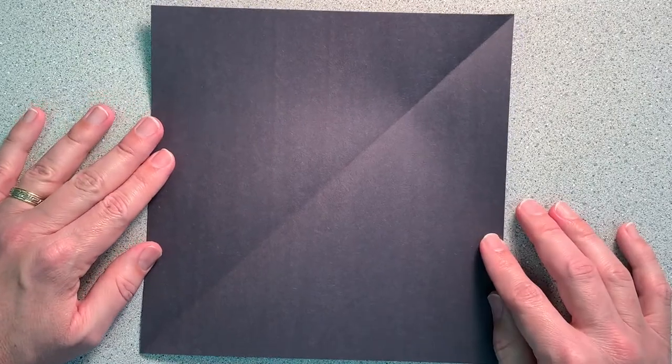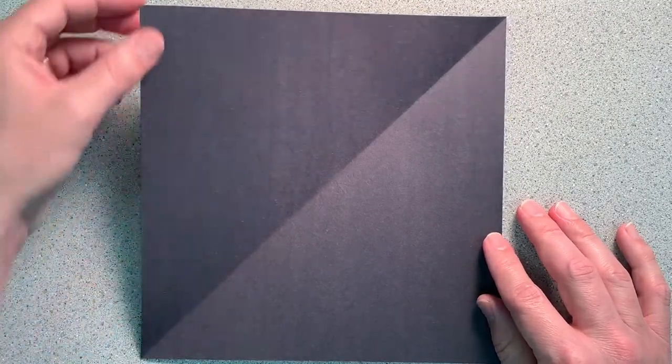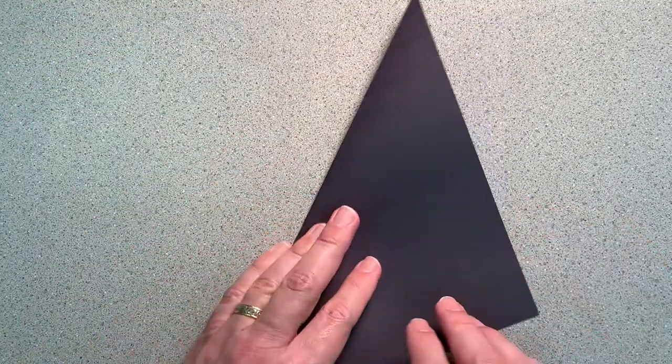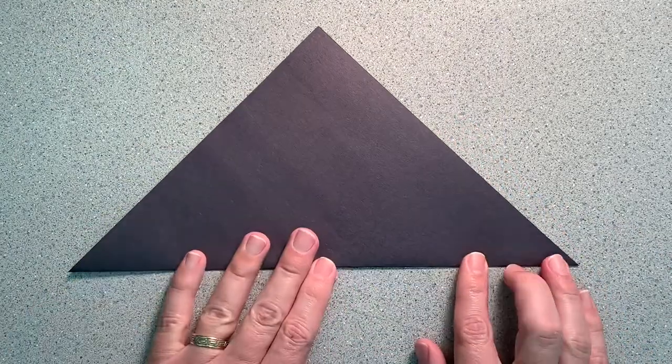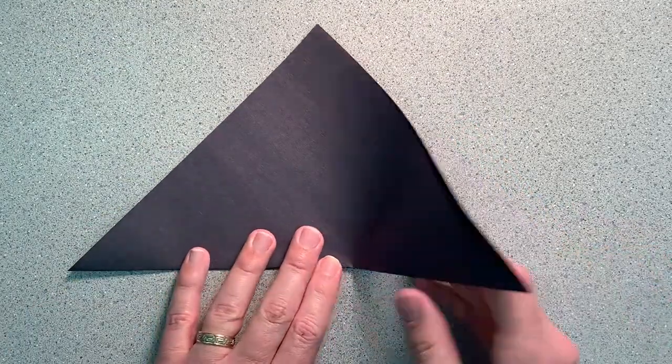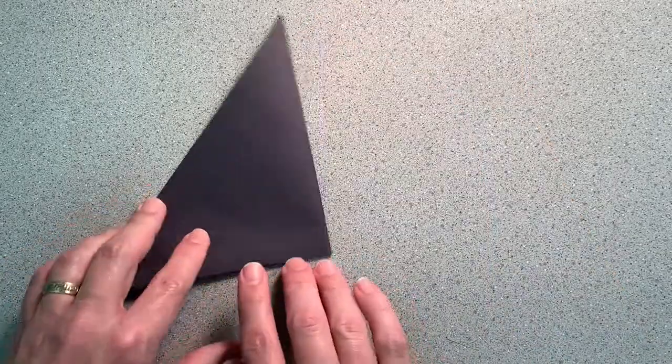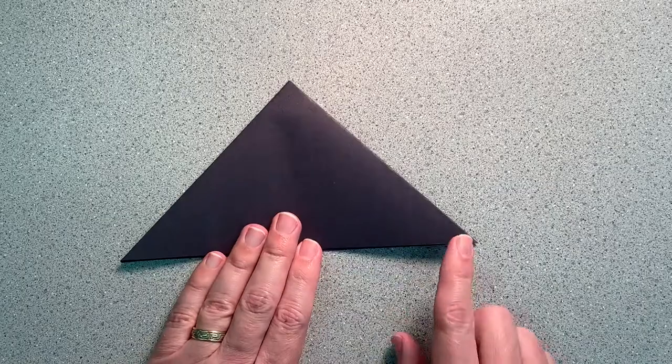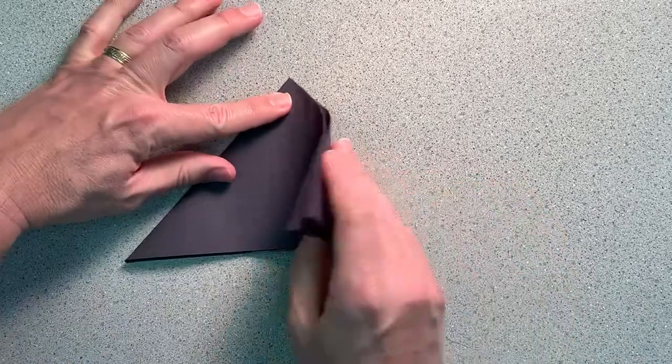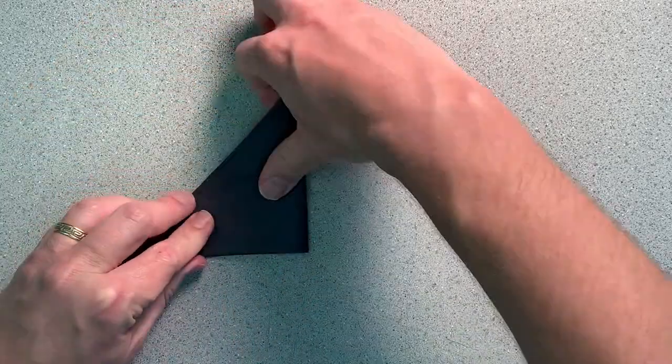Now that we have a square shape, we're going to fold the paper in half corner to corner to make a triangle. We're going to fold it again corner to corner to make an even smaller triangle. Crease along that fold line. One more time, corner to corner, fold it in half, make an even smaller triangle.